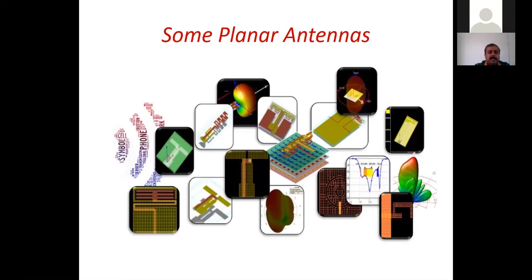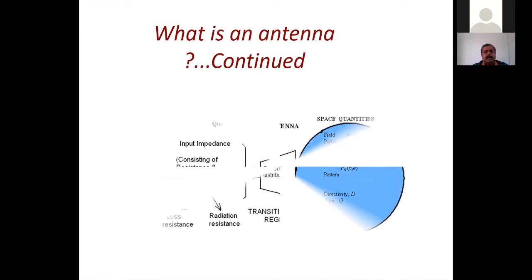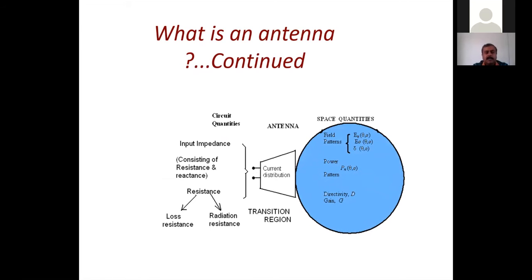Here are some planar antenna examples: a meander line antenna, a patch antenna, a comb-shaped patch antenna, a dipole antenna, and a printed dipole that has taken the form of a Vivaldi-type antenna, which offers very wide bandwidth.